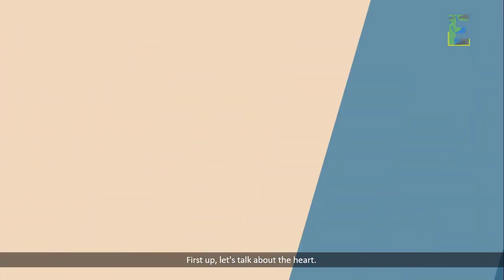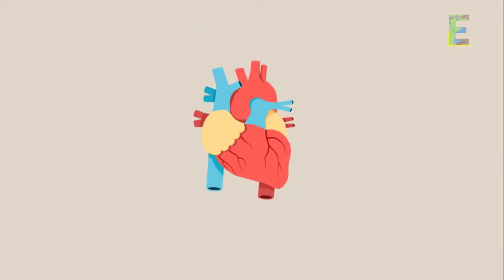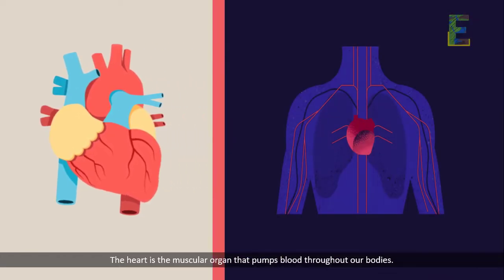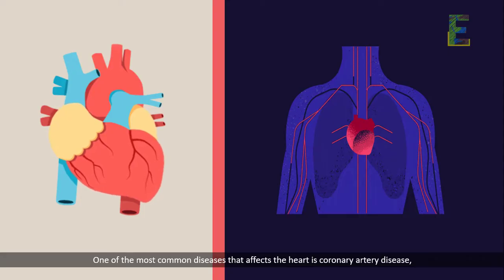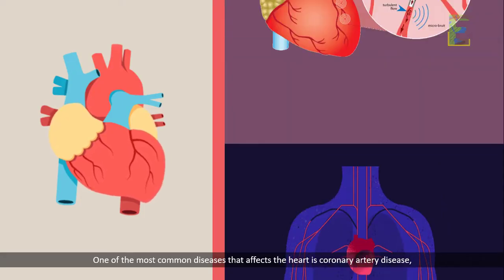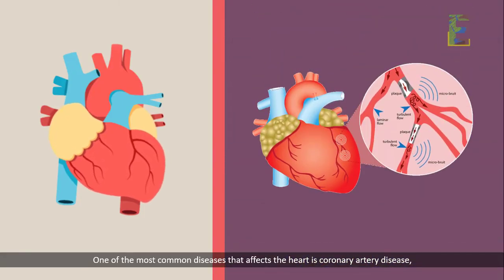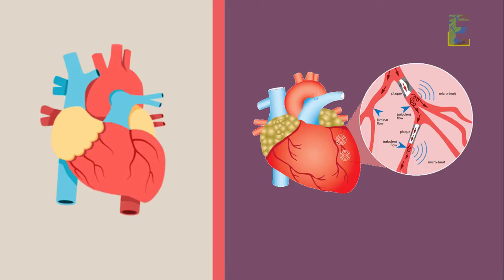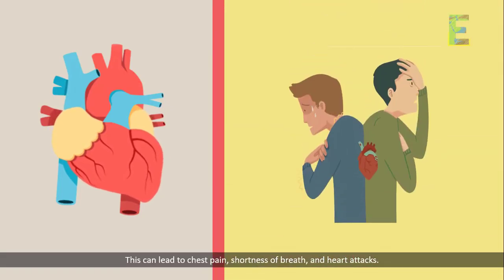First up, let's talk about the heart. The heart is the muscular organ that pumps blood throughout our bodies. One of the most common diseases that affects the heart is coronary artery disease, which is caused by a buildup of plaque in the arteries that supply blood to the heart. This can lead to chest pain, shortness of breath, and heart attacks.